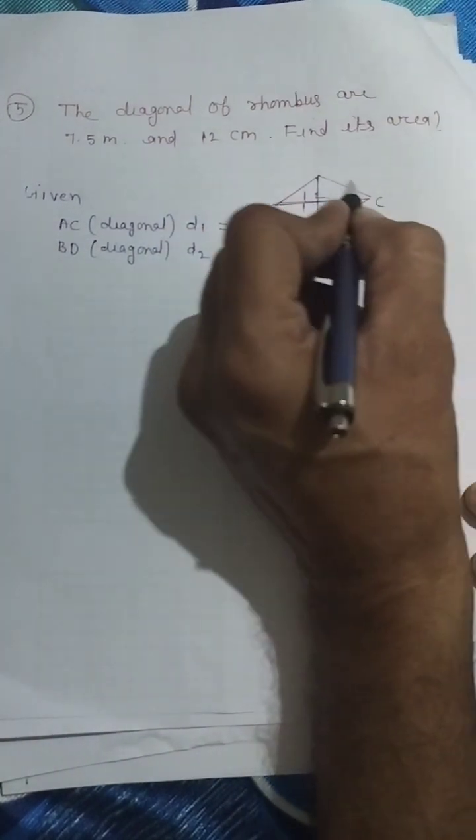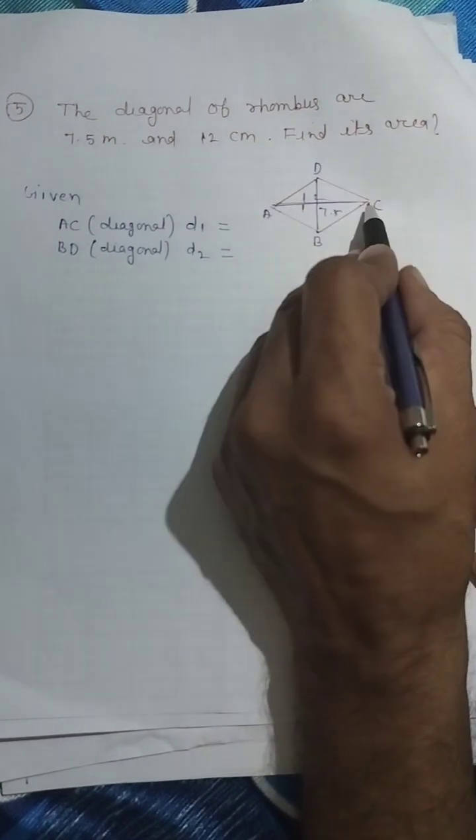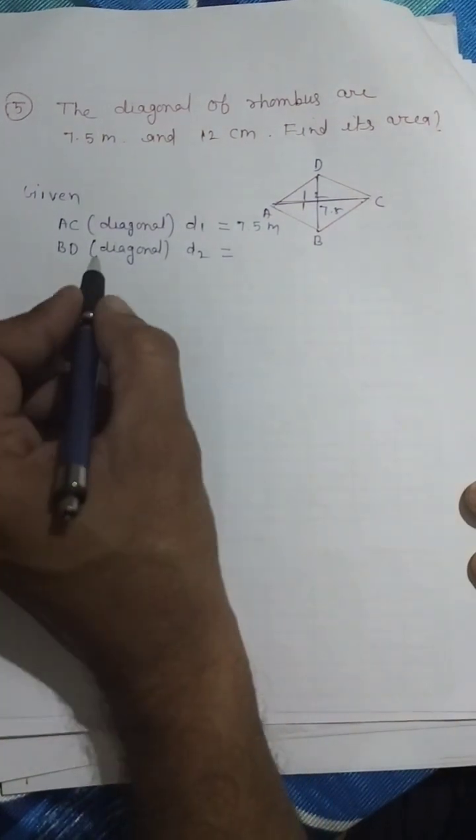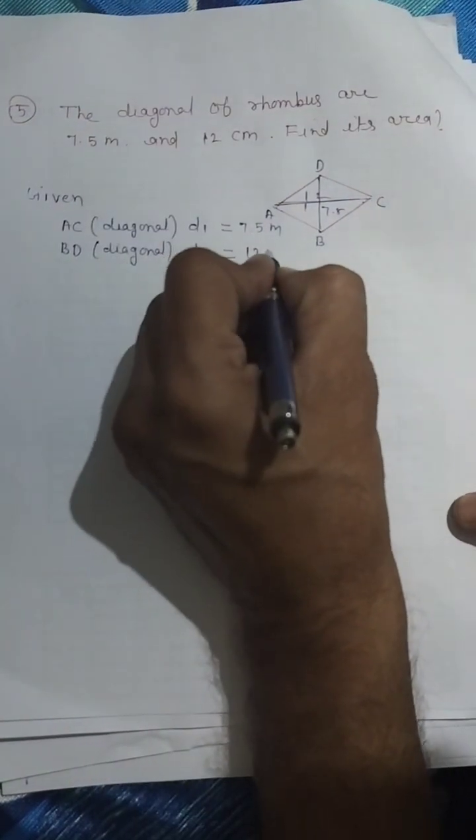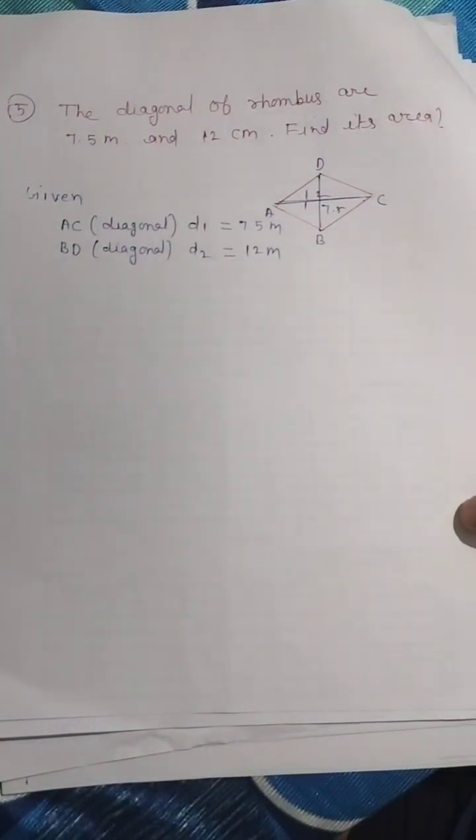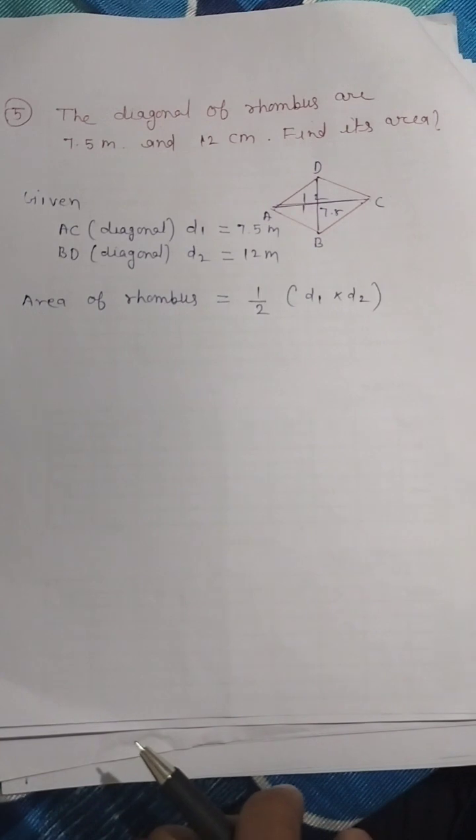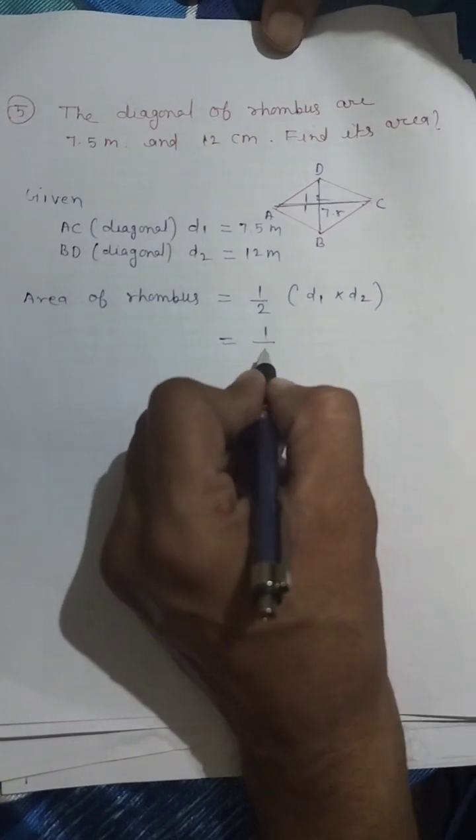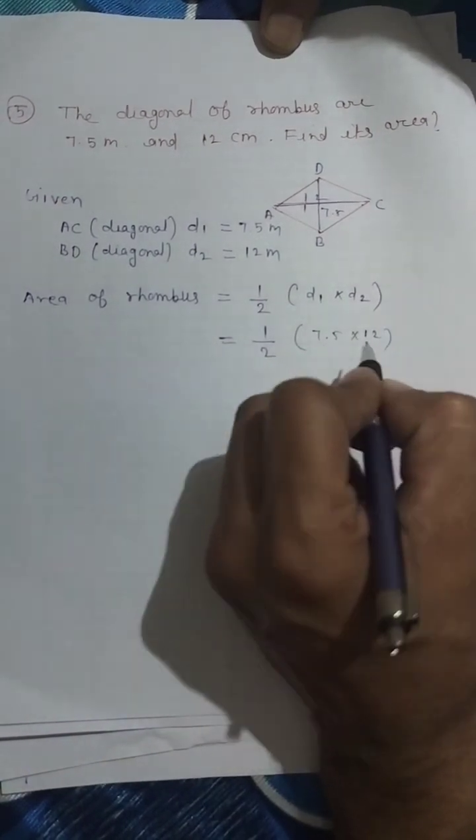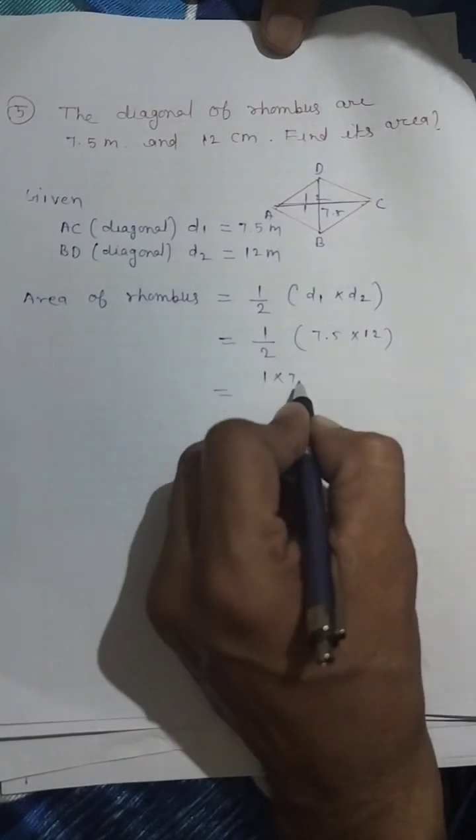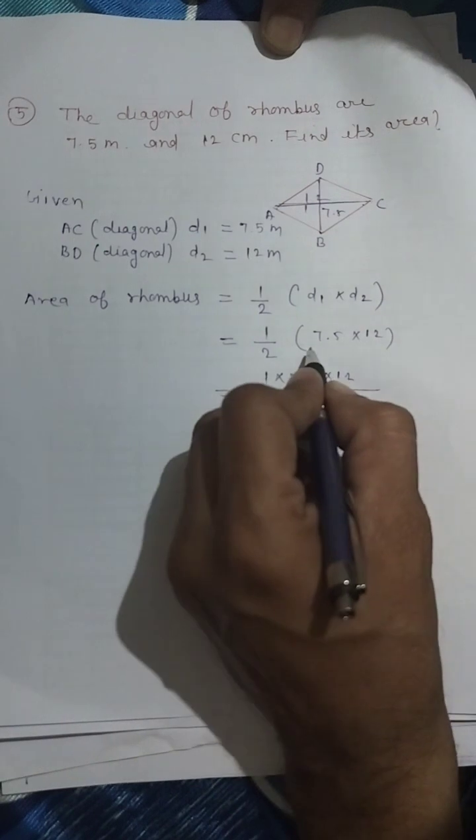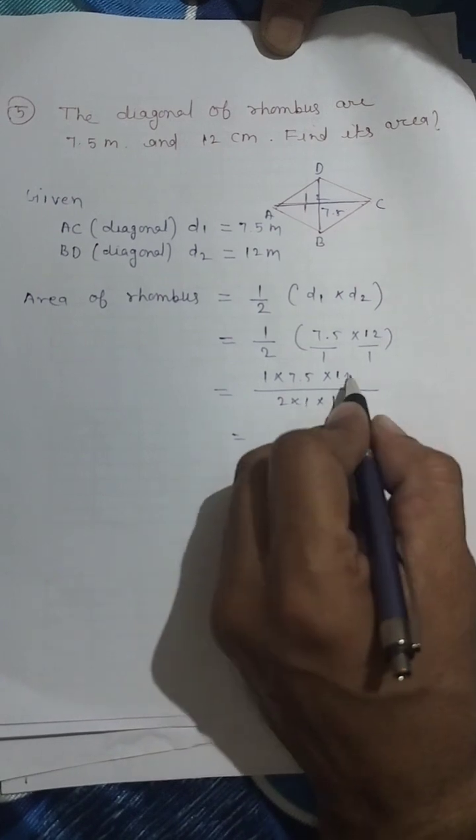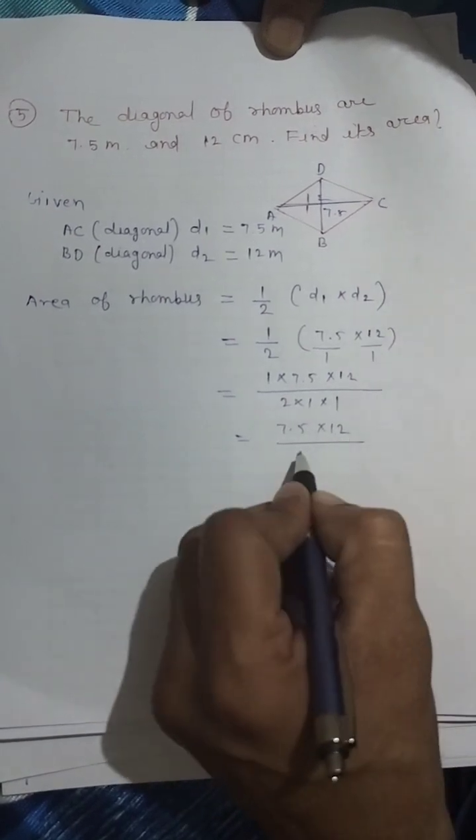AC is the first diagonal, 7.5 meters, and BD is the second diagonal, 12 meters. Area of rhombus equals 1 by 2 into 7.5 into 12. Two into 12 is 6, so this becomes 7.5 into 6.